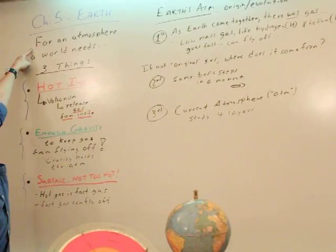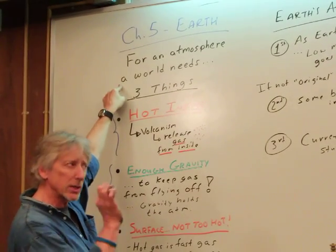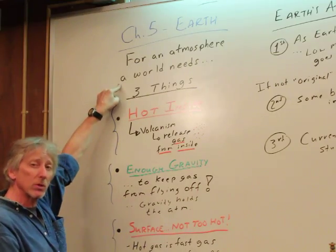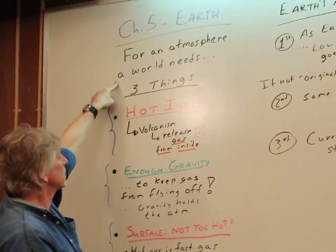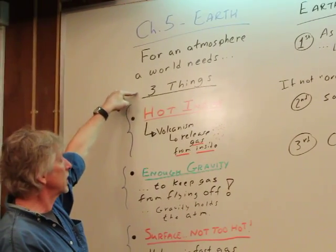So for an atmosphere, a world needs three things. Now again, there's more complexity to all this. So we're hitting some key ideas, some ways to start thinking about it. If you want more, you need chemistry, physics, biology, and study things like that, meteorology, geology. But let's just hit some ideas, three things.